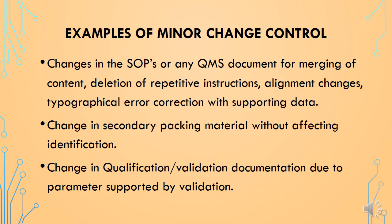Here are a few examples of minor change controls. Changes in SOPs or any QMS document such as protocols for merging of content, deletion of repetitive instructions, alignment changes, or typographical error correction with supporting data shall be categorized under minor change control. Change in secondary packing material without affecting or altering the identification of the product can also be classified under minor change control. Change in qualification or validation documentation due to parameters supported by validation can also be classified under minor change control category.